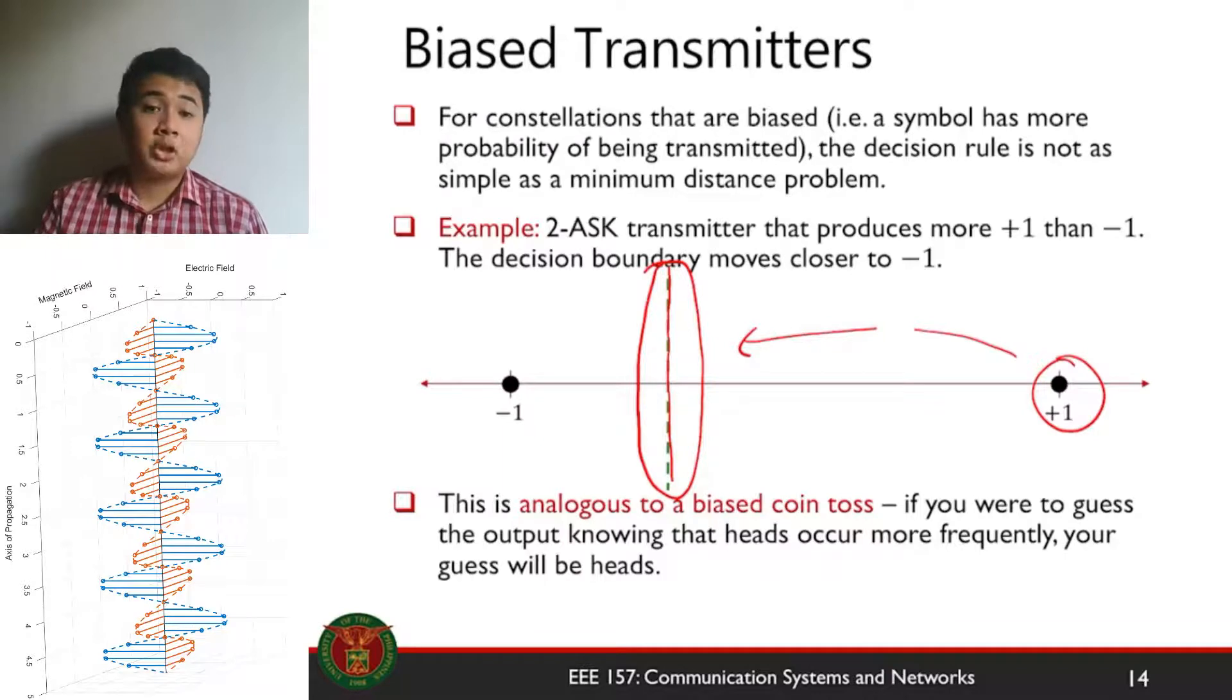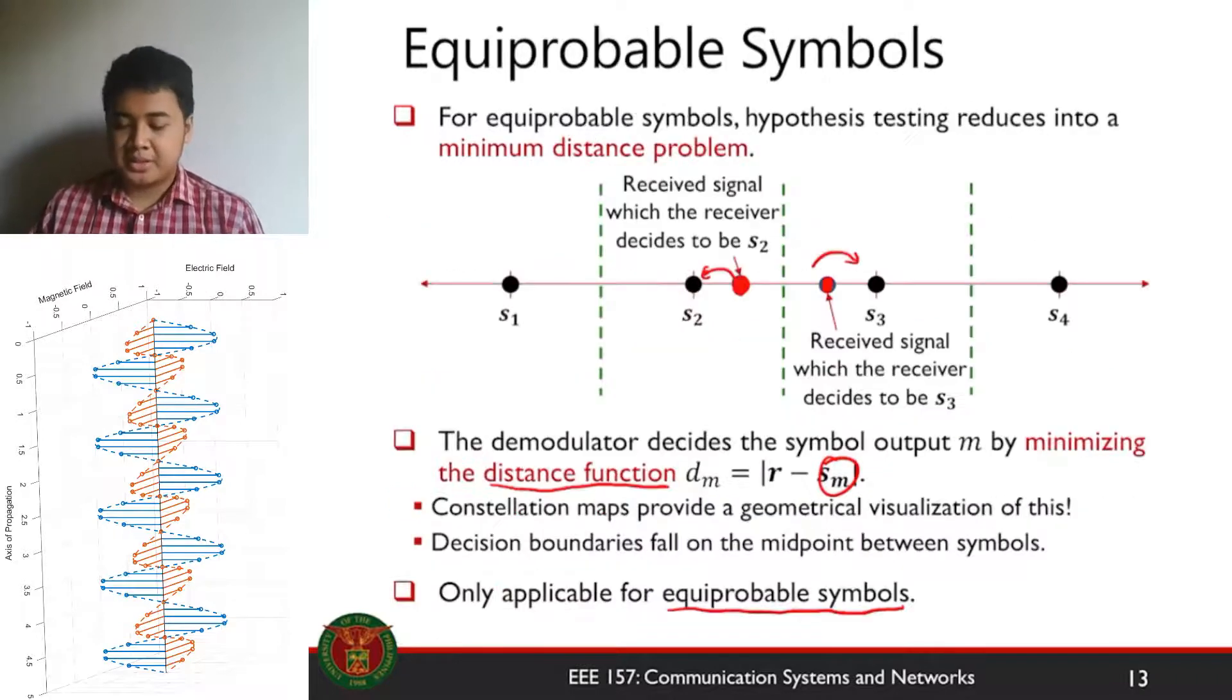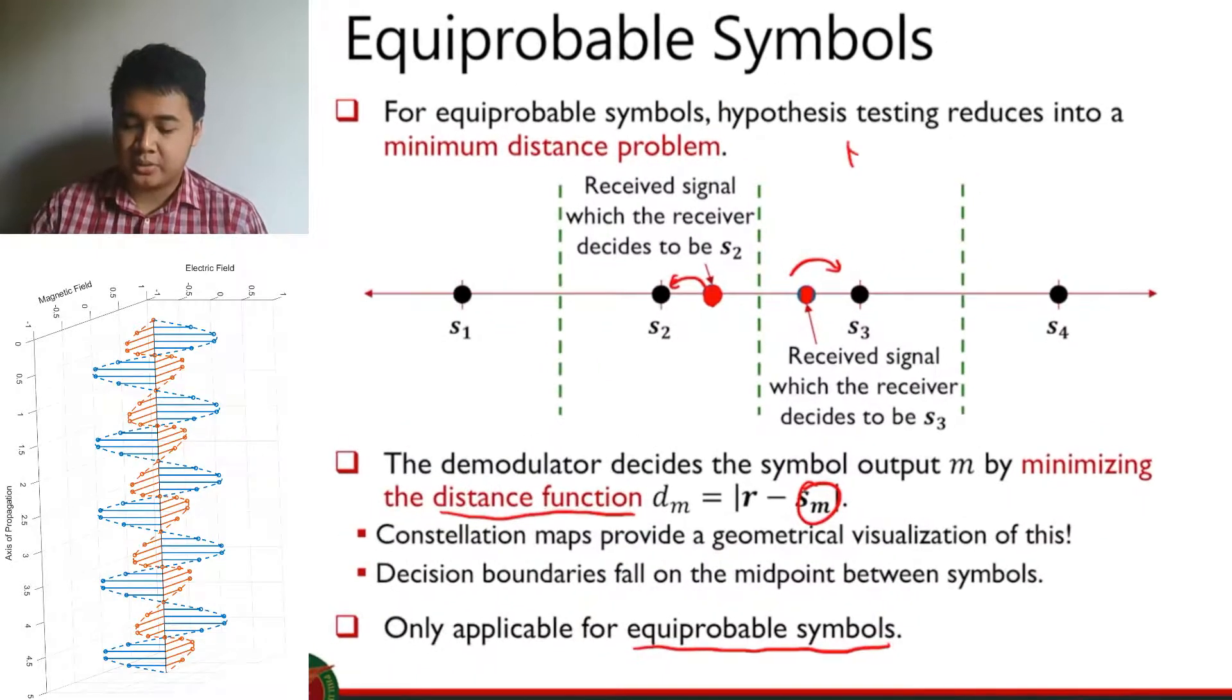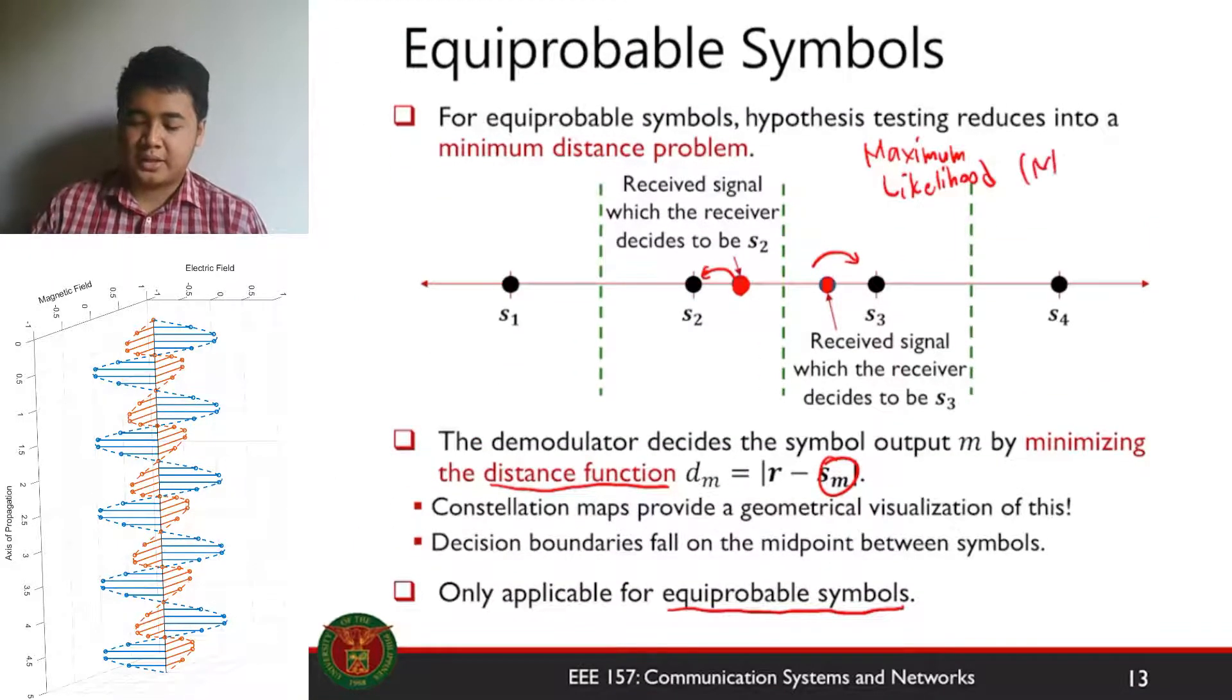This is how we demodulate biased transmitters. This rule is called the maximum a posteriori decision rule, or we call it the MAP rule. What you saw from equiprobable symbols is a simplification of the MAP rule that becomes the maximum likelihood decision rule, or ML rule as we call it, not mobile legends, maximum likelihood.